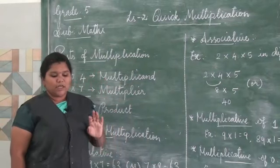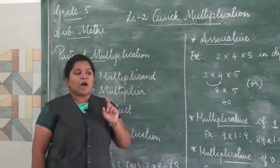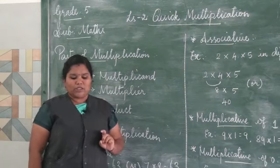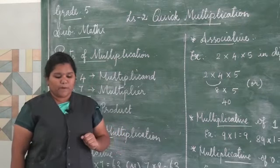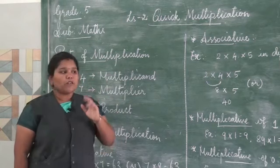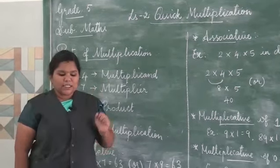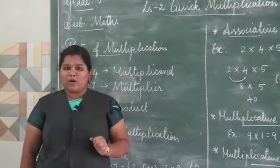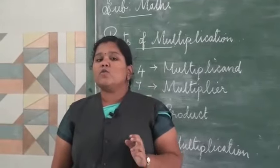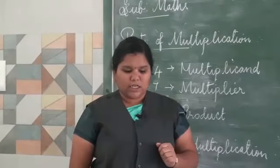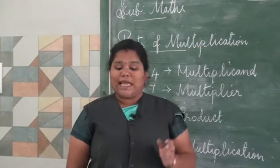Before I go with the lesson, I want to ask you some questions. Renu and her father have come to buy mangoes. There are five baskets of mangoes in a shop. They wanted to buy all the five baskets. In each basket there are 123 mangoes.